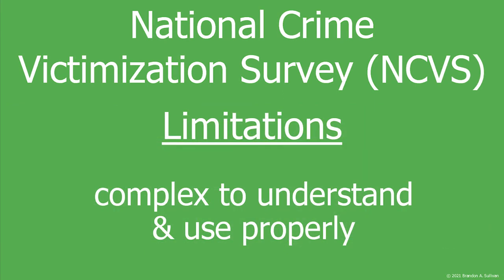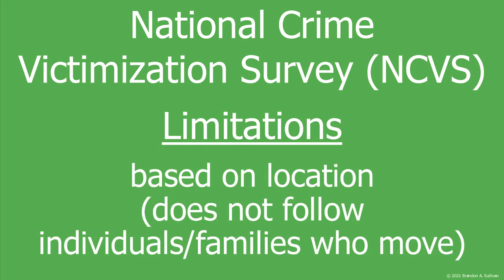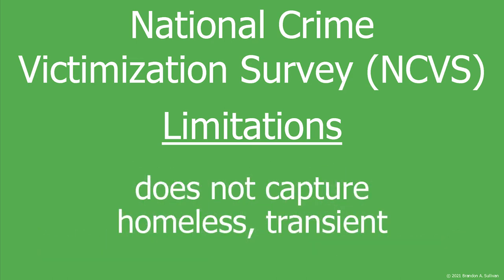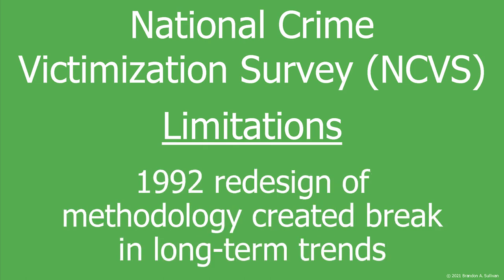The limitations of the NCVS mostly center on its complexity, as it takes a great deal of time and expertise to properly analyze the data. One of its strengths is also a limitation: selection for inclusion in the survey is based on location, meaning whoever occupies that residence is surveyed. It does not follow families or individuals who happen to move during the data collection period. Because of this, the NCVS does not capture victimization of the homeless or transient. There was also a redesign of the survey in 1992, which created a break in the series of data collection, complicating the ability to conduct long-term longitudinal analyses.